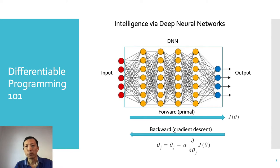First, what is differentiable programming? It is essentially a generalized way to inject intelligence into modern software. We know that when tuning a deep neural network, there is a forward path from input to output. It is also called the primal path.